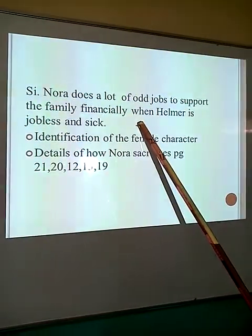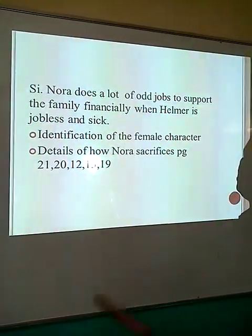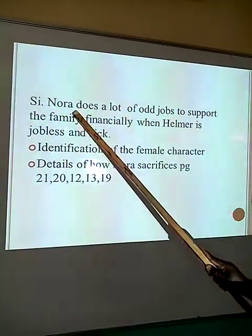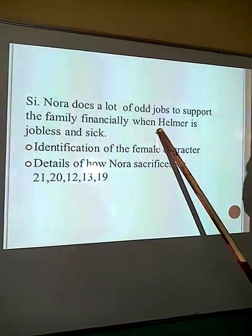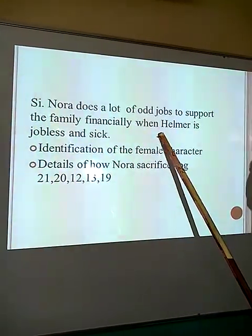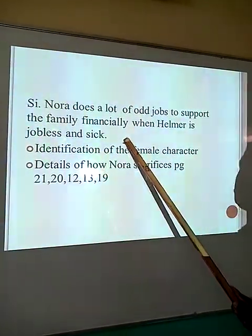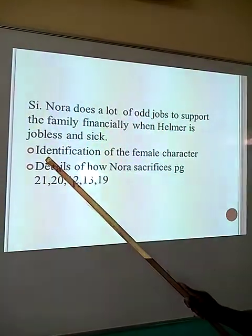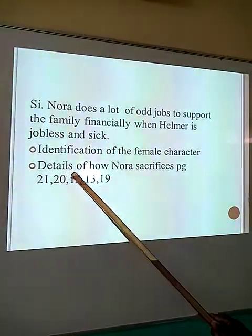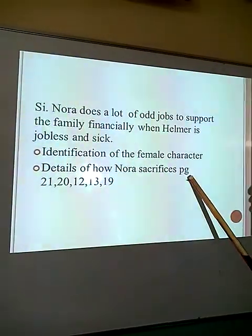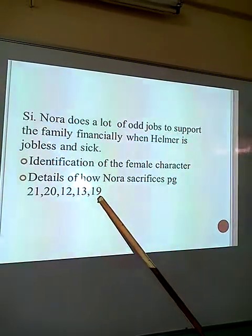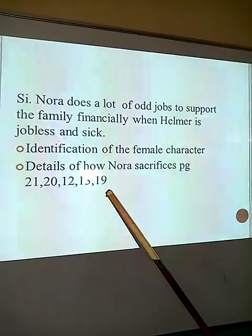We begin with Nora. 'Nora does a lot of odd jobs to support the family financially when Helmer is jobless and sick.' Once you make that statement you stand a chance to get your one point. This is what we call an episodic sentence — it identifies the woman and the sacrifice she has made. For Nora to work in this society, where men are supposed to provide, she steps into the husband's shoes when he is jobless and sick. The detail requires identifying the female character and the details of how Nora sacrifices — pages 21, 20, 12, 13, and 19 contain different sacrifices Nora makes.